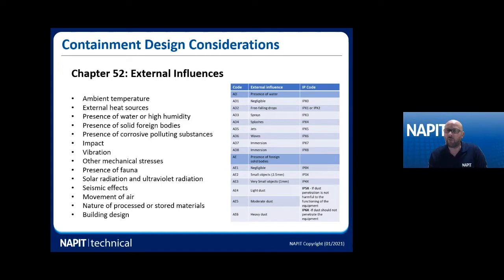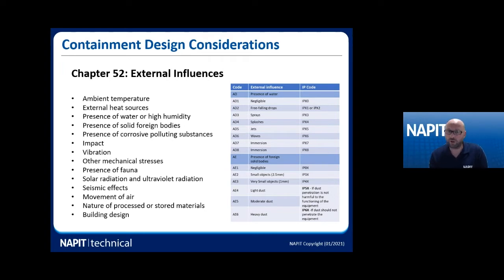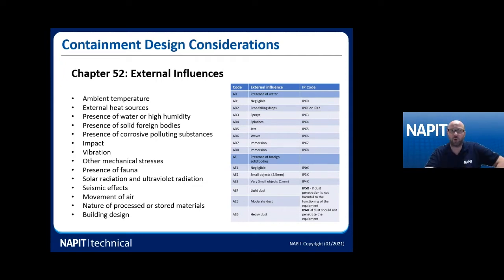Here's an example of IP codes. For presence of water, the classification is 'AD' followed by a number from one to eight, where one is negligible through to eight for immersion. On the right hand side we have the International Protection code which relates to protection against those areas. If it's got an 'X' and then a number, that's generally when we're dealing with water. Where we're dealing with solid objects it's a number then 'X' on the end. For example, IP44 would indicate protection against small objects and water splashes.